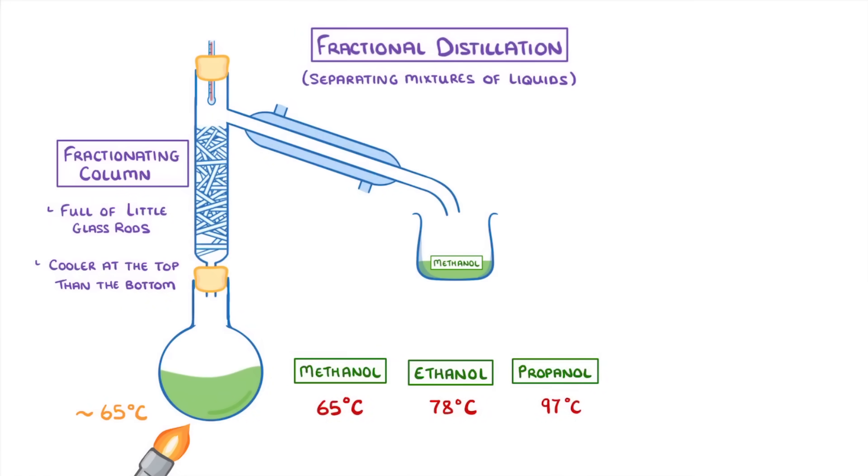However, just by chance, some of the ethanol, and maybe even propanol, would also evaporate. But as they rise up the fractionating column, and come into contact with all of those glass rods, which are much cooler than their boiling point, they'd condense back into liquid form, and fall back into the flask. This means that the only liquid that will get out the other side will be pure methanol.